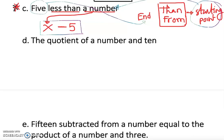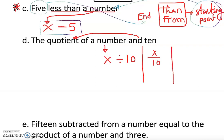Next: 'the quotient of a number and 10.' Remember, quotient means you divide and the result is the quotient — you have a dividend, a divisor, and the answer is the quotient. So 'a number' is x, and you divide by 10. You can write x divided by 10, or x over 10. Both forms are fine.